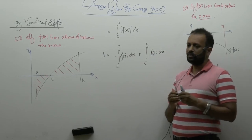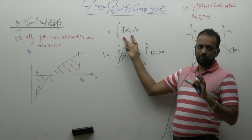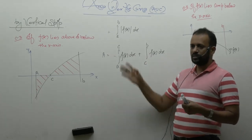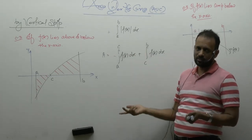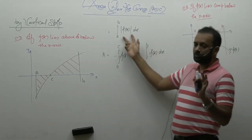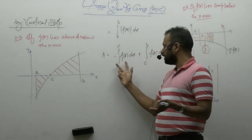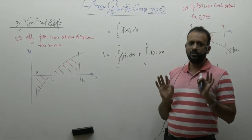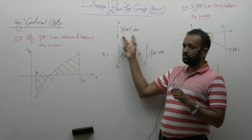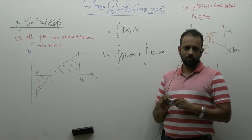Is everyone understanding what I'm saying? This answer — integral from a to b of |f(x)|dx — is correct for all three cases. In case 1 it is completely positive so no minus comes. In case 2 it is completely negative so a minus comes in front of the whole thing. In case 3 sometimes negative, sometimes positive. That is clear: integral a to b |f(x)|dx — so we can write three cases. Any question?